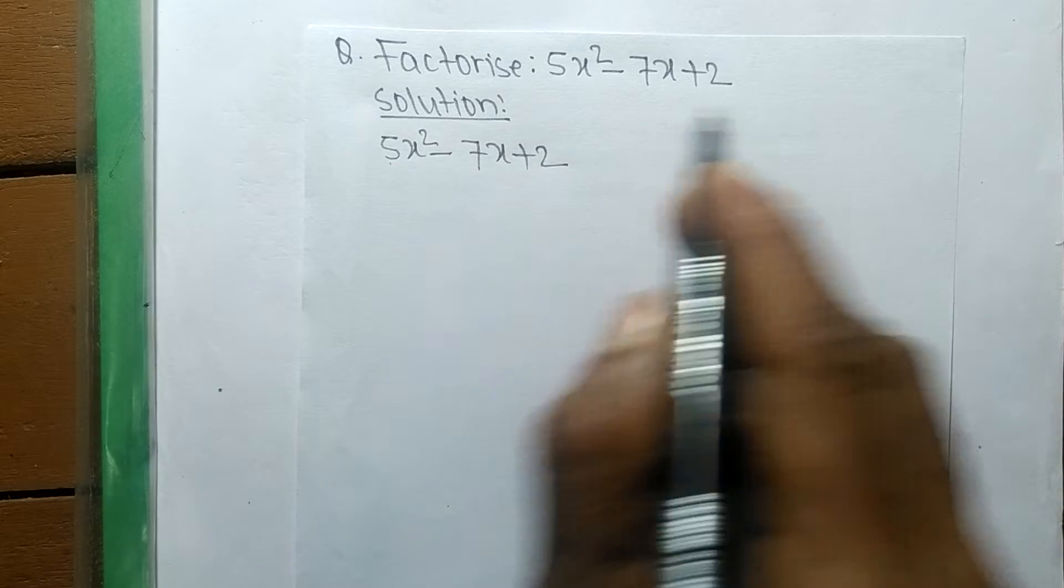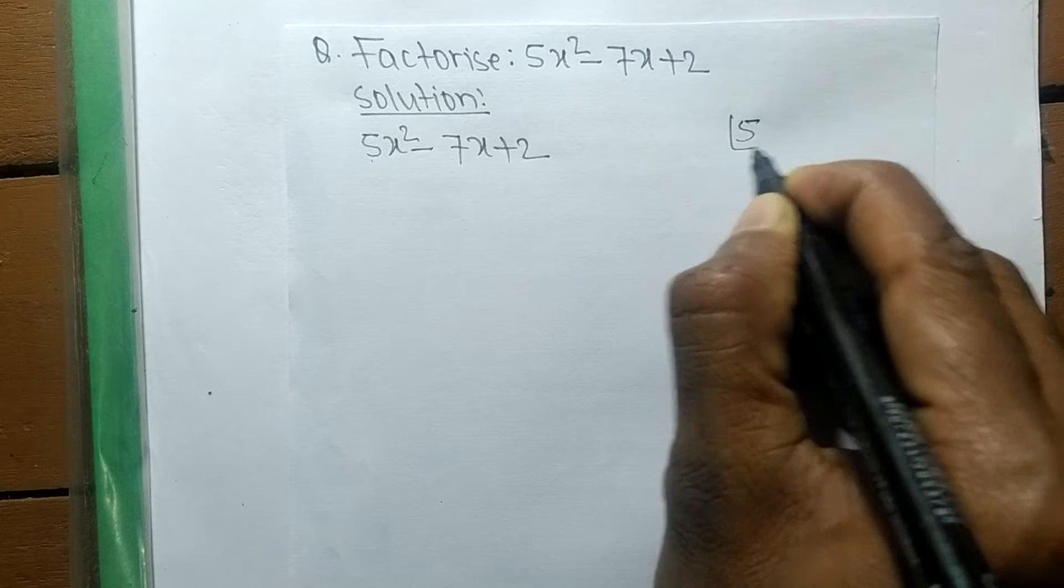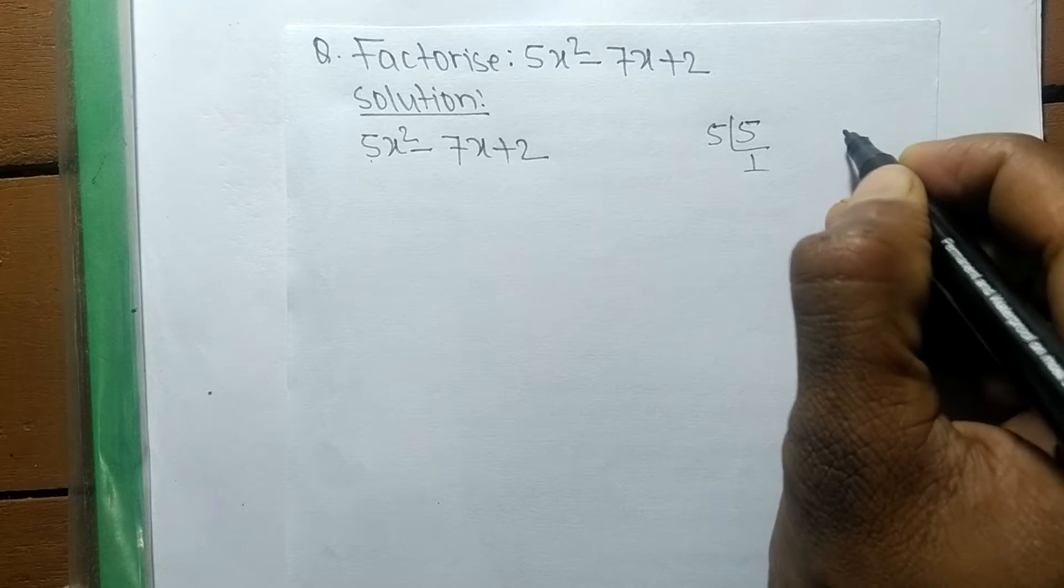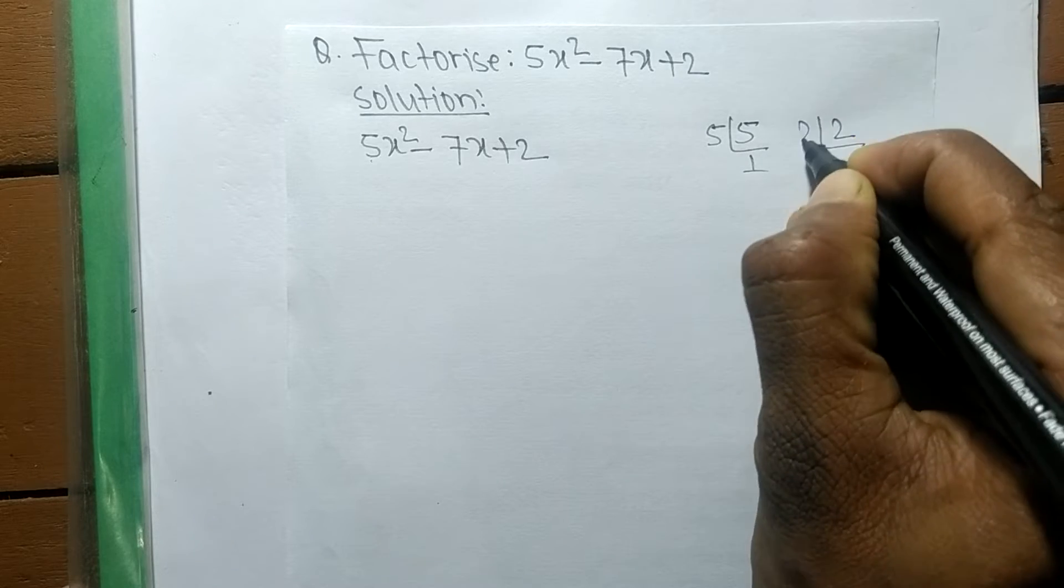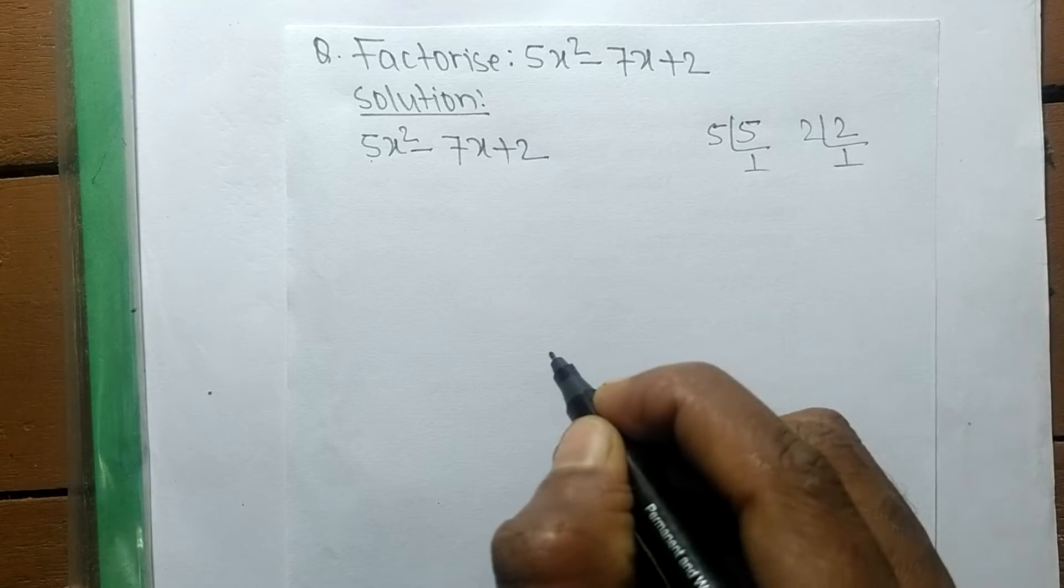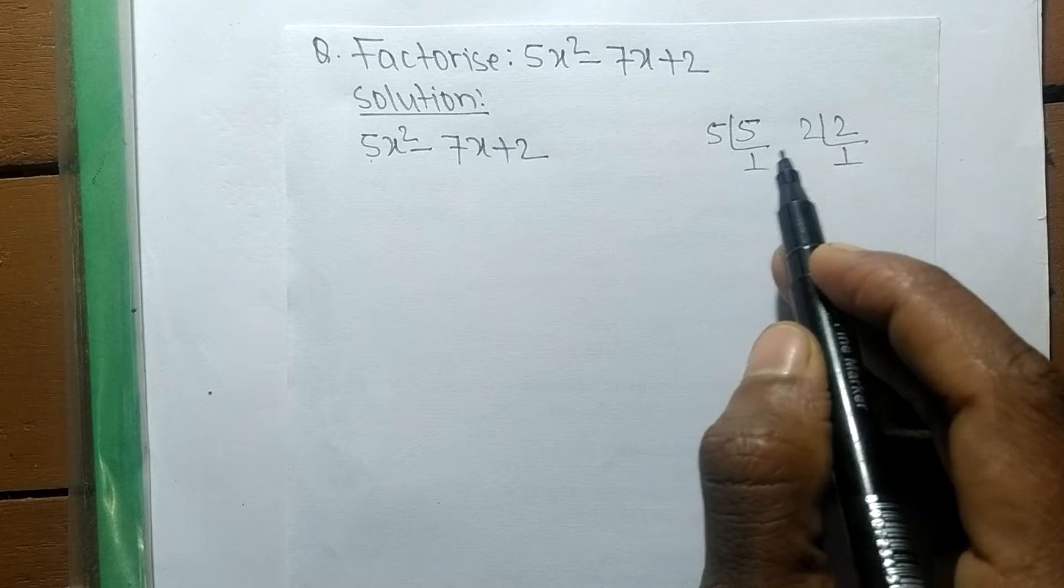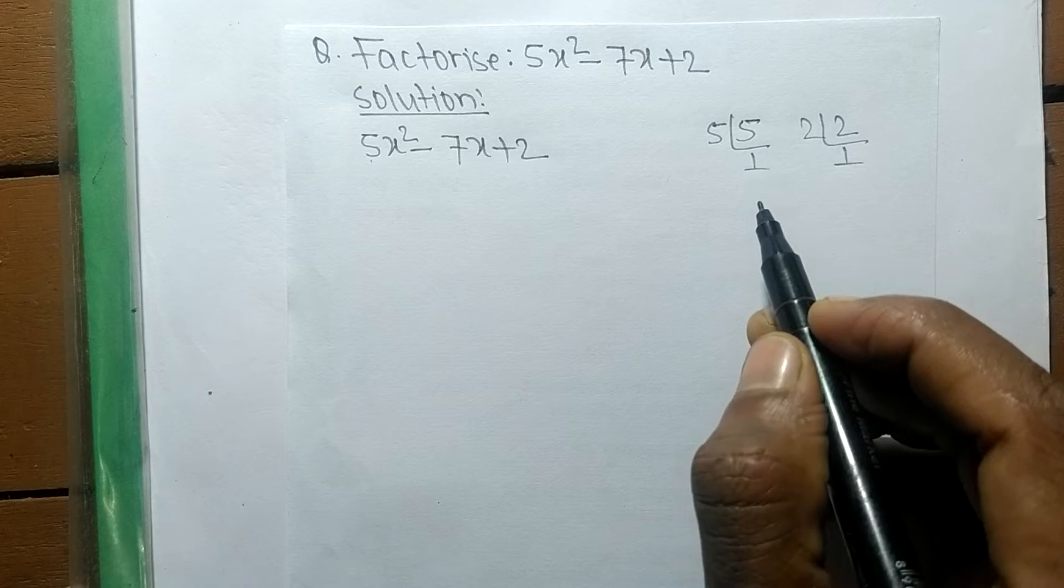So the factors of 5 is 5 times 1, which means 5. Like the factors of 2 is 2 times 1, which means 2. So now the numbers here we get are 5, 2, and 1.